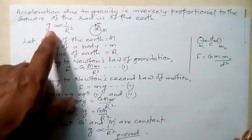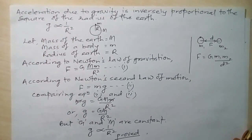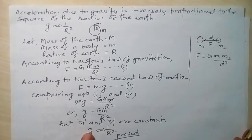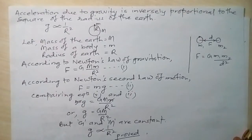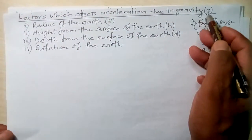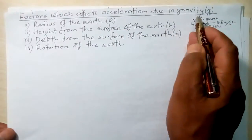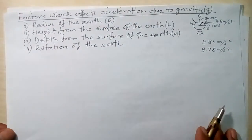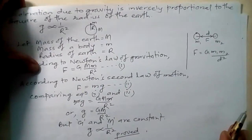The conclusion was: if the radius of the Earth at a place is more, then g will be less, and if the radius at a place is less, then g will be more. We are continuing with the relation between g and radius of the Earth. When we finish this, we will move on to the second, third, and fourth points.